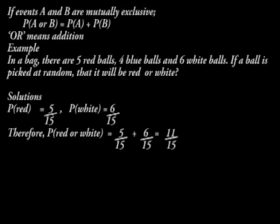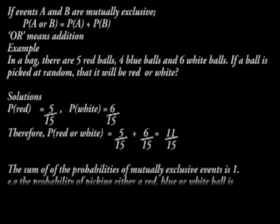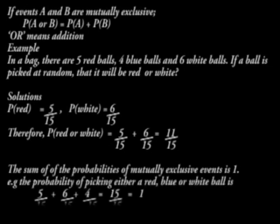The sum of probabilities of mutually exclusive events is 1. For example, the probability of picking either a red, blue, or white ball is 5/15 + 6/15 + 4/15 = 15/15 = 1.